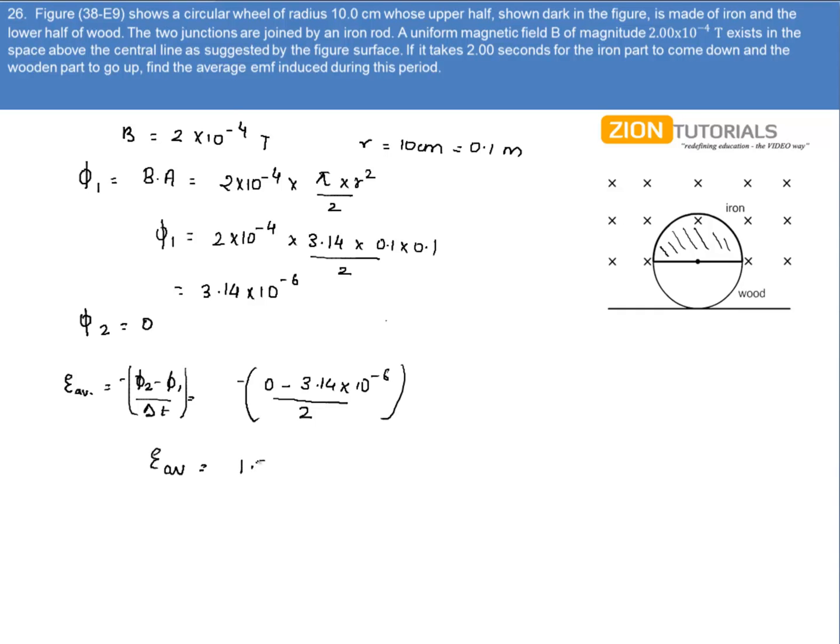The EMF average is coming out to be 1.57 into 10 to the power minus 6 volt. That is the answer.